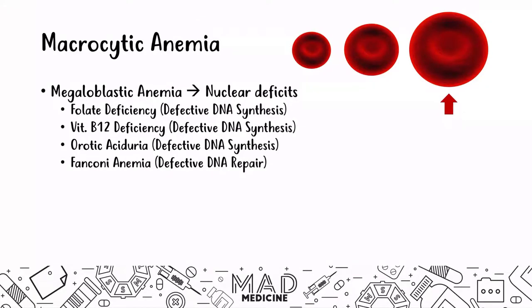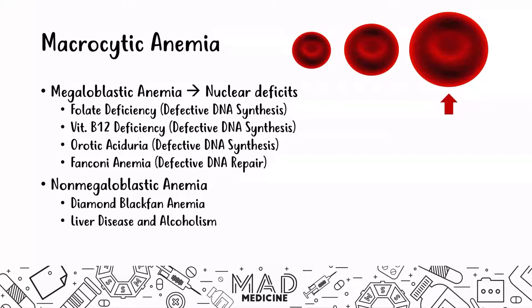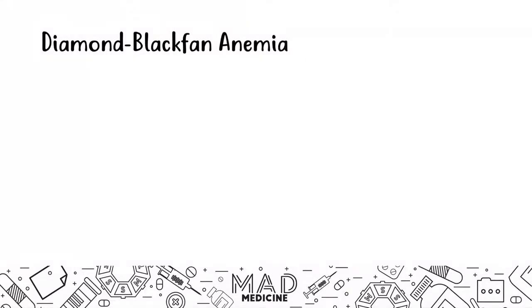Megaloblastic anemias are caused by nuclear deficits that can occur due to defective DNA synthesis or repair. We've talked about all of these issues in our previous video, so you can go check them out. Today, we're going to be talking about Diamond Blackfan anemia, which is a non-megaloblastic anemia — there is nothing wrong with nuclear repair or DNA synthesis. It is occurring because of other reasons we're going to cover. We are not going to cover liver disease and alcoholism today, even though we covered them previously.